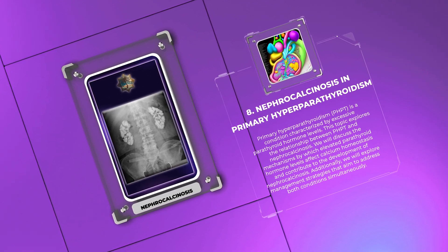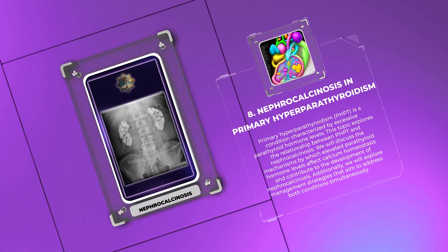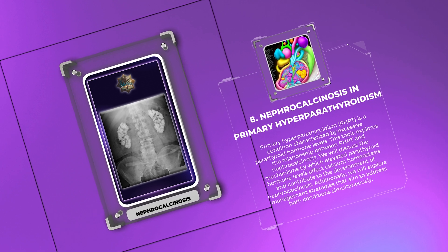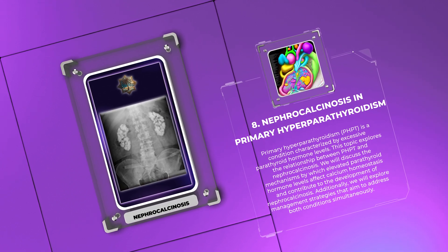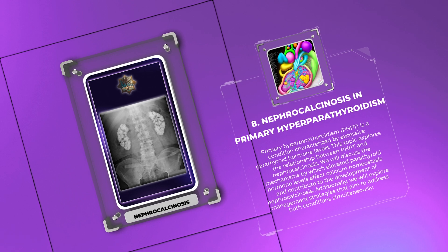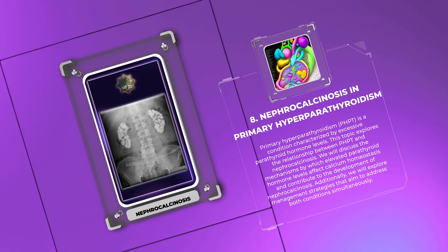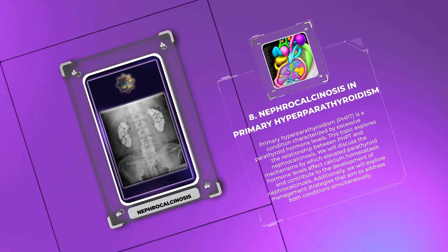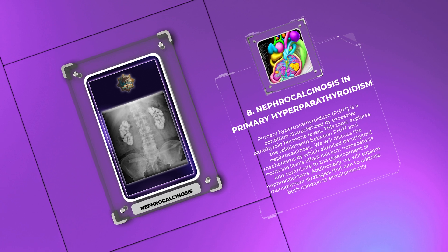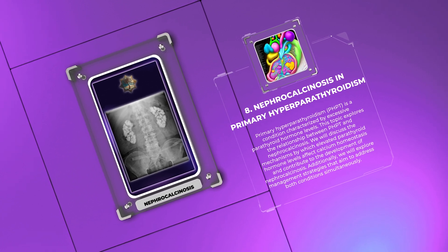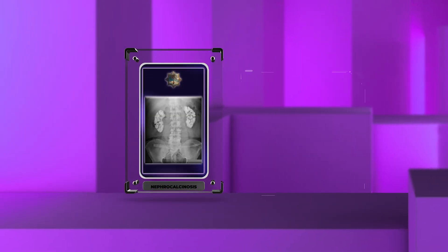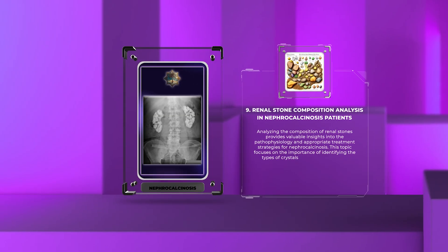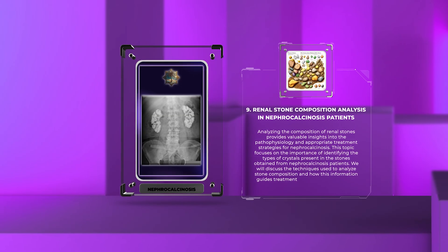Primary hyperparathyroidism (PHPT) is a condition characterized by excessive parathyroid hormone levels. This topic explores the relationship between PHPT and nephrocalcinosis. We will discuss the mechanisms by which elevated parathyroid hormone levels affect calcium homeostasis and contribute to the development of nephrocalcinosis, as well as management strategies that aim to address both conditions simultaneously.